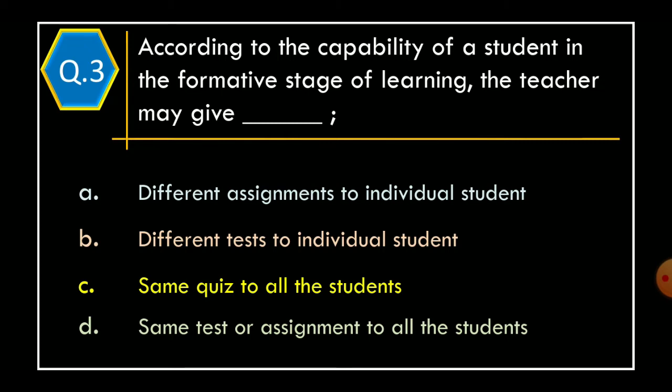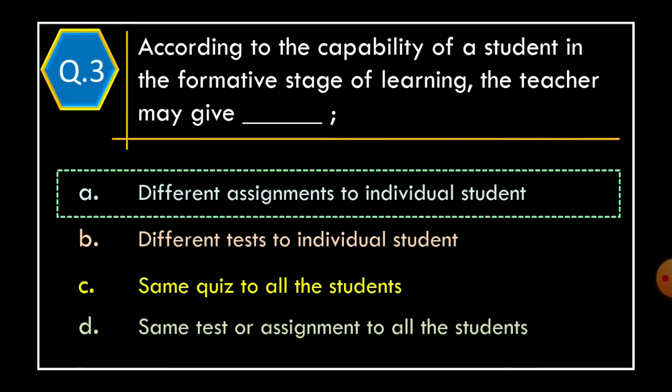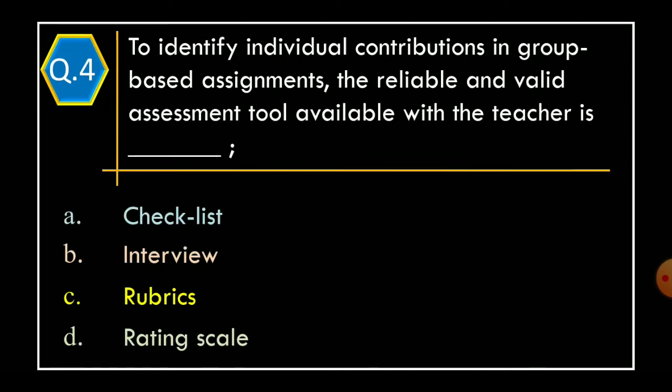Question 3: According to the capability of a student in the formative stage of learning, the teacher may give — Option A: different assignments to individual students; Option B: different tests to individual students; Option C: same quiz to all the students; Option D: same test or assignment to all the students. The correct option is Option A: different assignments to individual students.